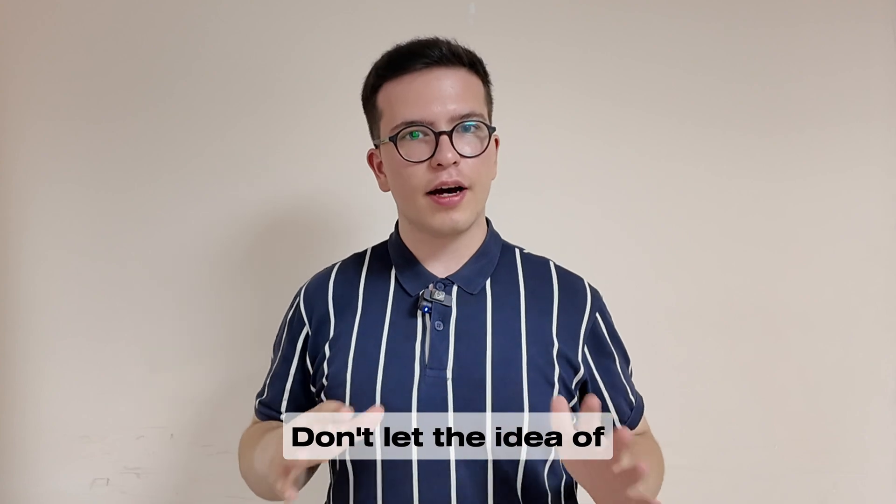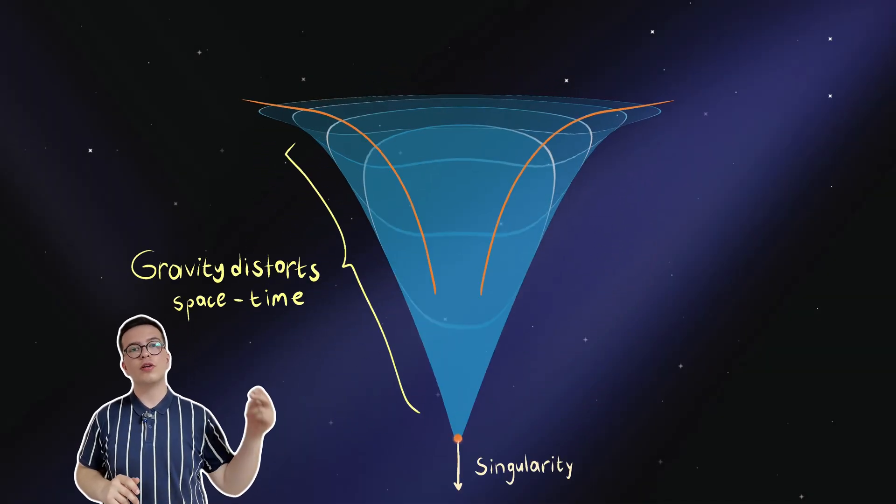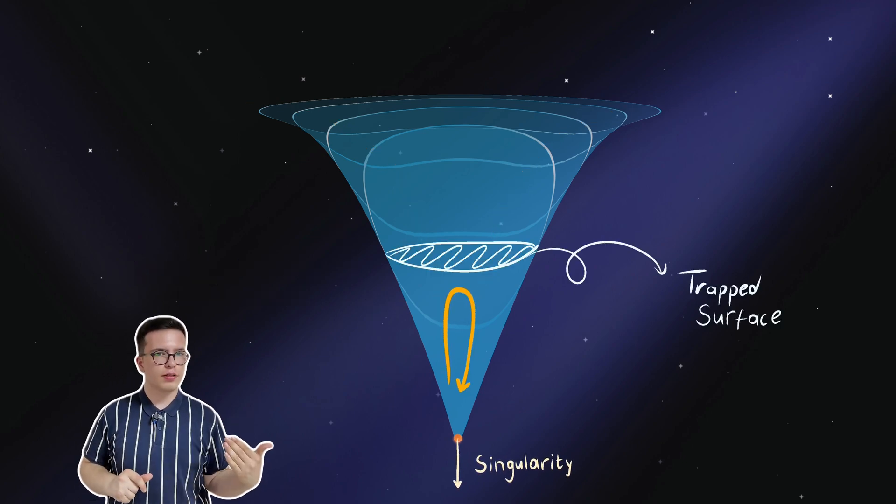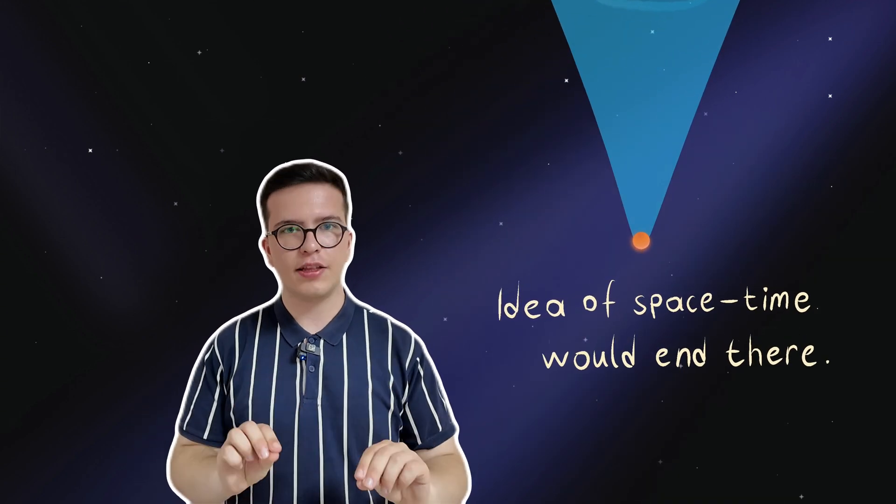Don't let the idea of event horizon trick you. Remember what I said, point of no return. Penrose didn't get tricked and came up with the idea of a trapped surface. No null geodesic was going upwards. It was always going downwards to the center. What was going upwards was a trapped surface. Once the null geodesics reached the focus, it would be meaningless to track them because the idea of spacetime would end there.